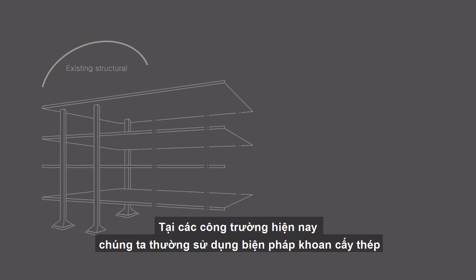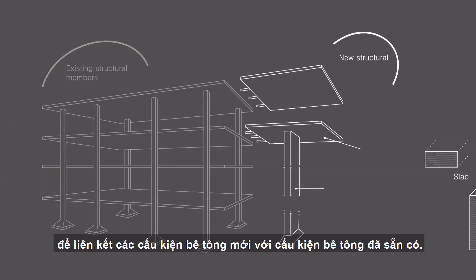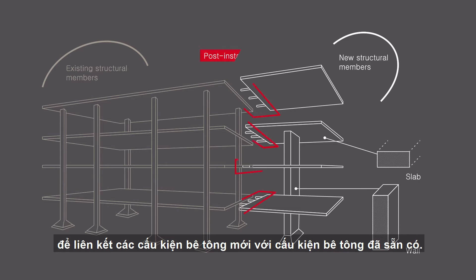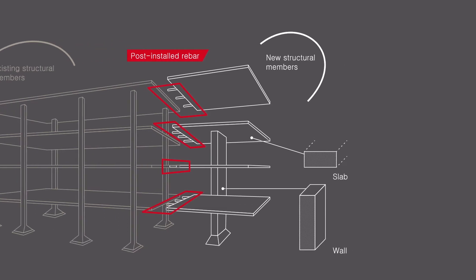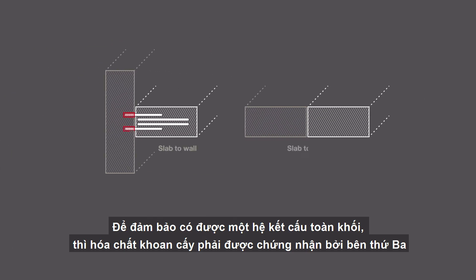On jobsite, we use post-installed rebar to connect a new structural member to an existing one. In order to get a monolithic structure, the used mortar must be approved for post-installed rebar applications and the contact surface must be rough.